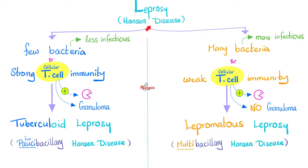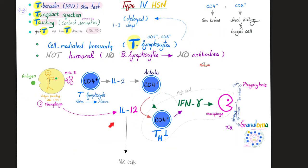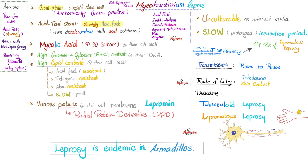Two types of leprosy: we have tuberculoid leprosy — few bacteria but strong immunity — versus lepromatous leprosy — many bacteria versus weak immunity. Which one has the granuloma? The answer is tuberculoid leprosy, because of the strong T-cell immunity. Making a granuloma is a type 4 hypersensitivity reaction, where the T-lymphocytes activate the macrophages. Mycobacterium leprae has lots of mycolic acid, long-chain, that's why they are acid-fast.